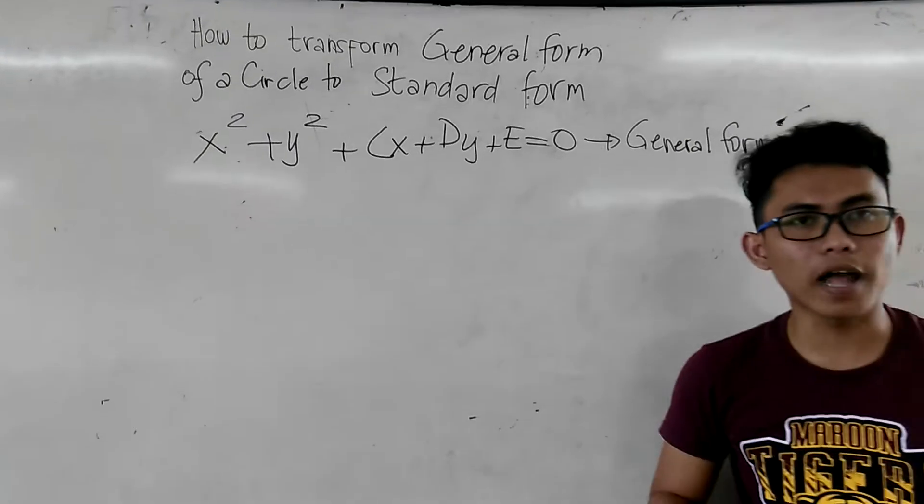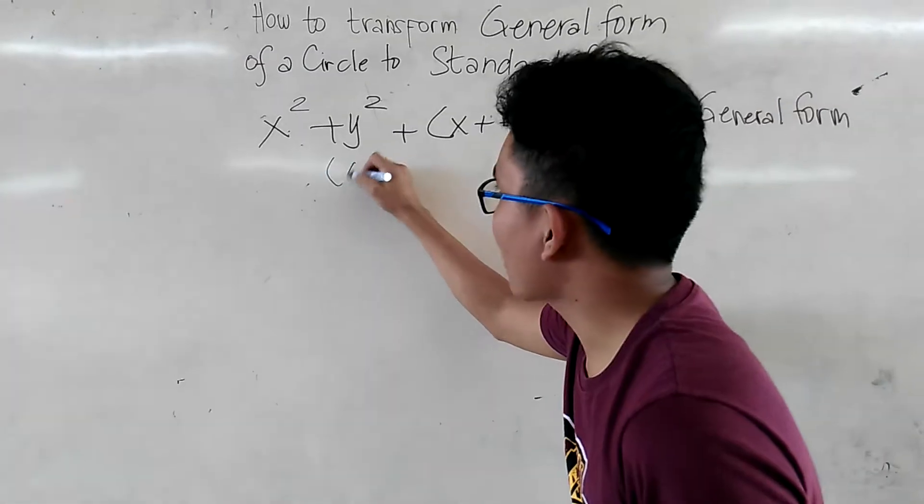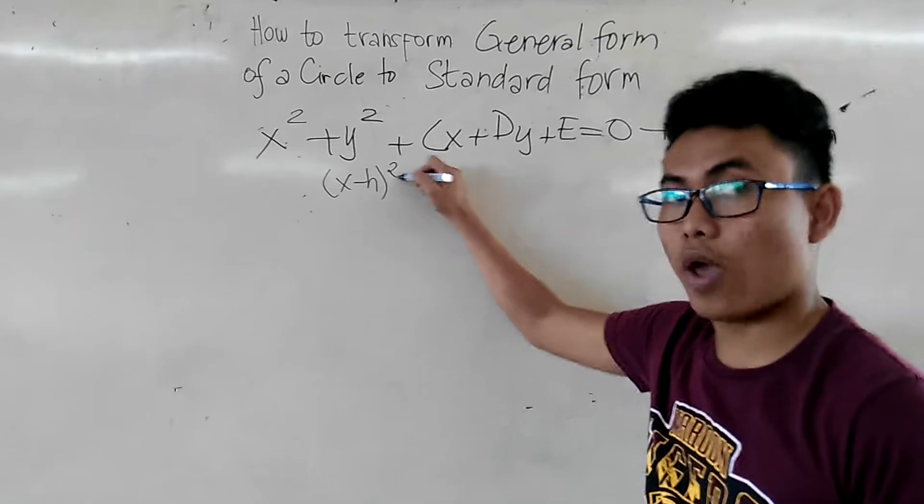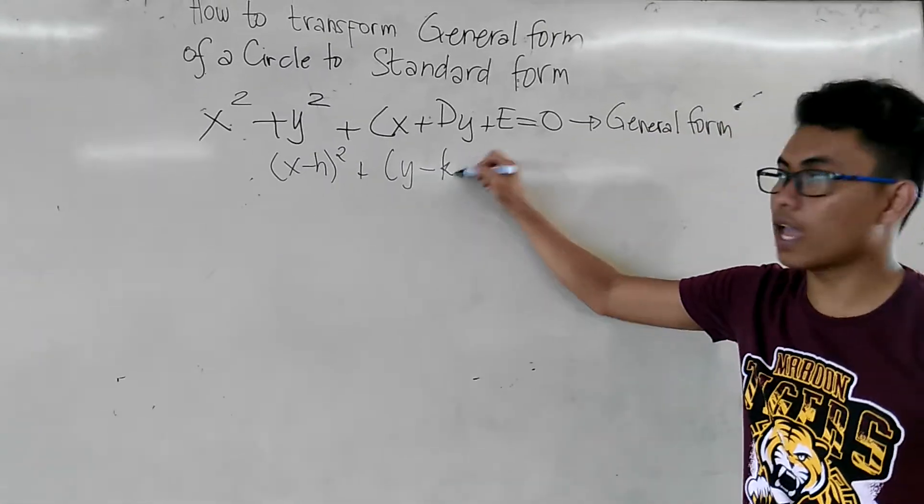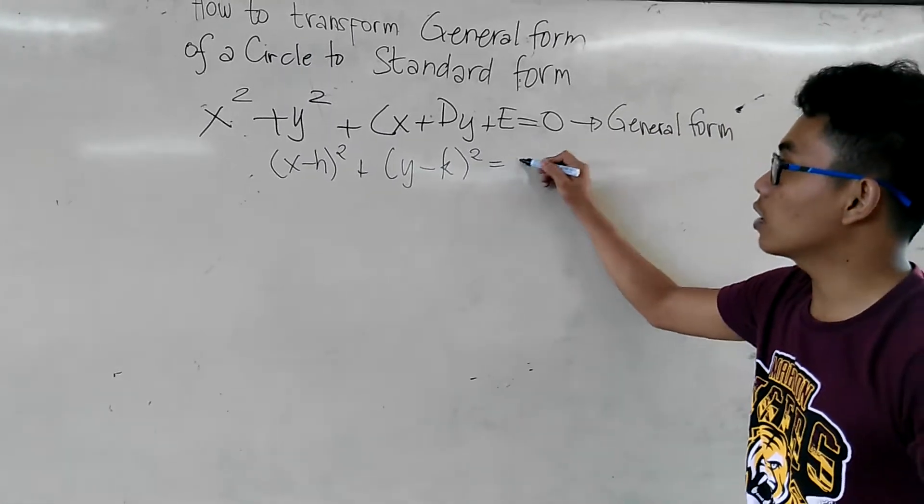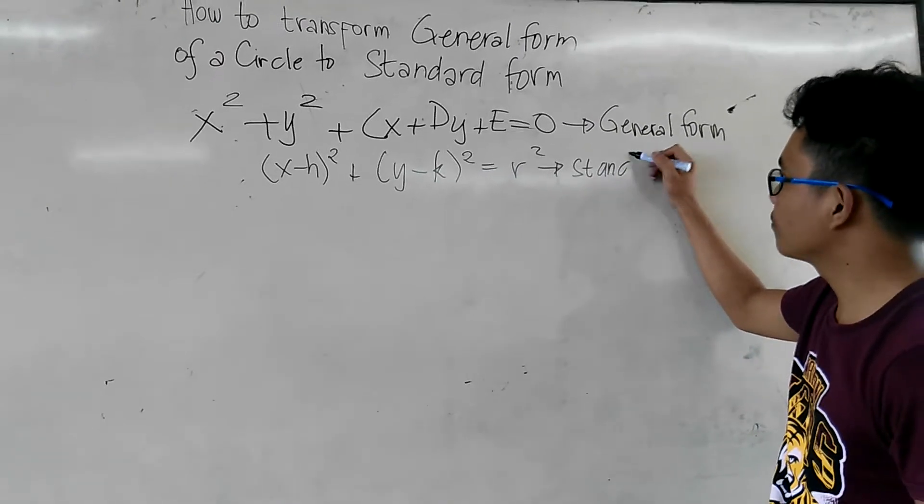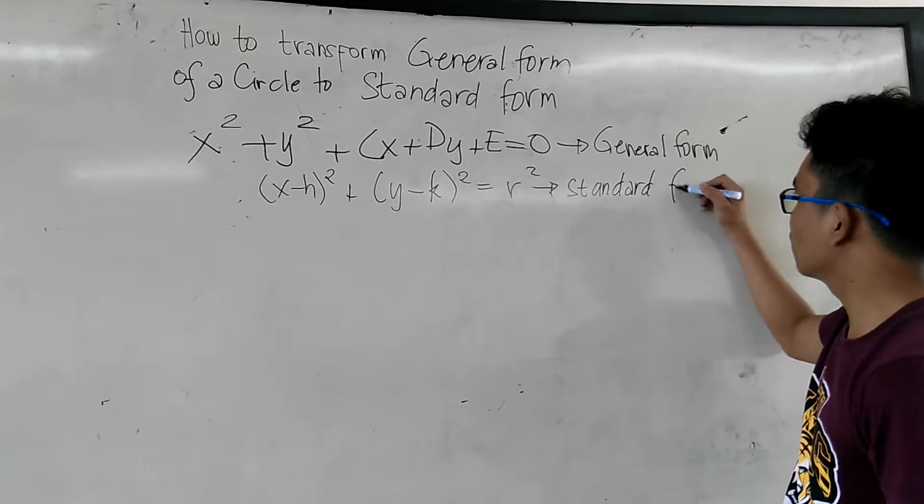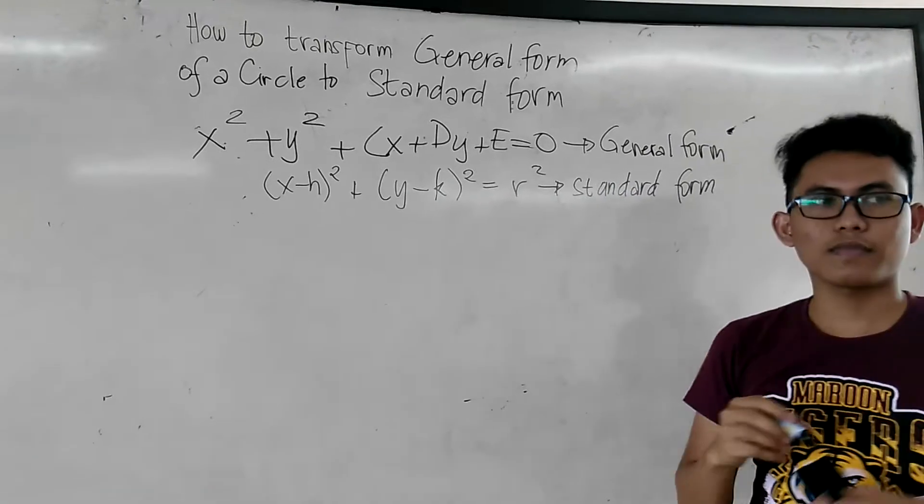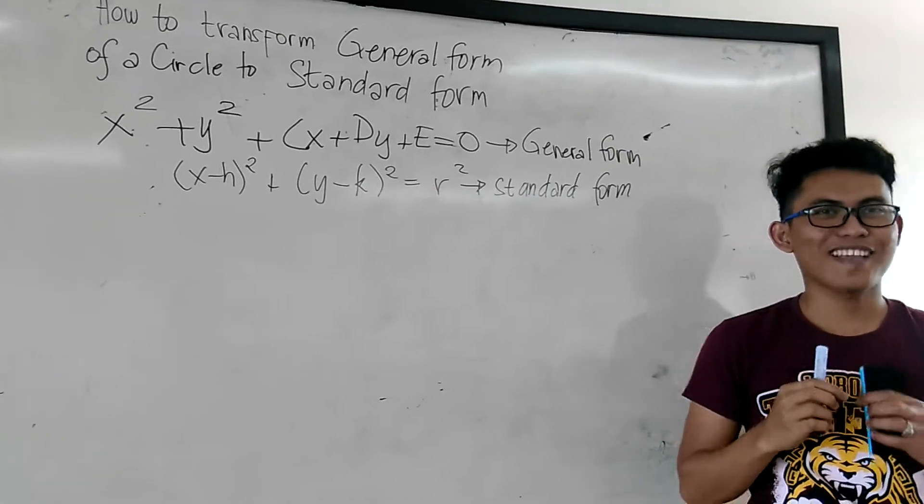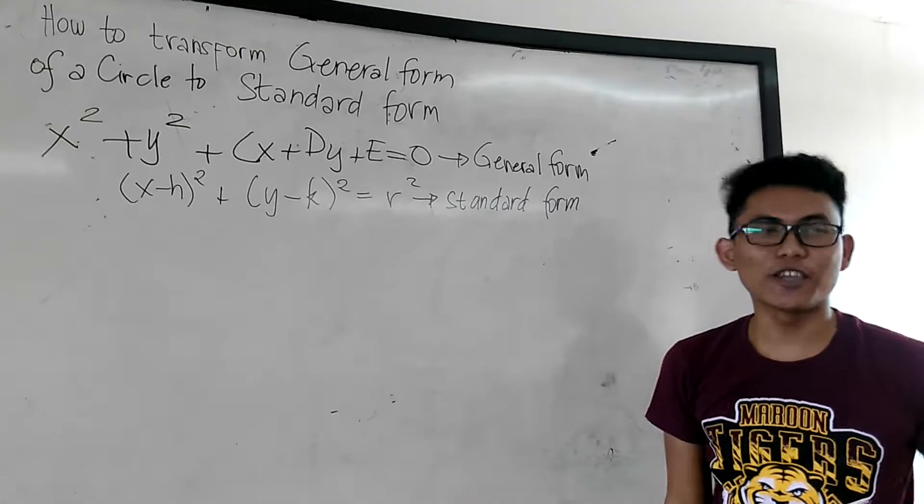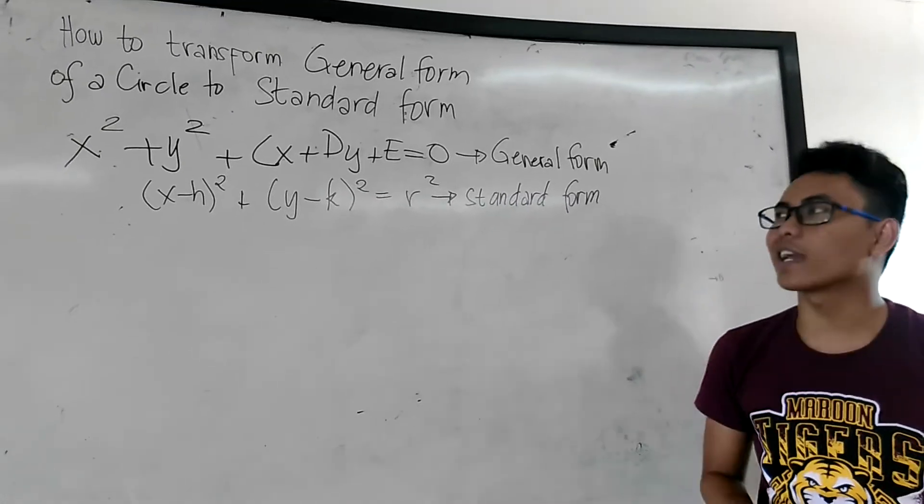At yung isa naman, yung standard form naman natin, yung x minus h squared plus y minus k squared is equal to r squared. So yung standard form. Okay, so ngayon, let's have an example.